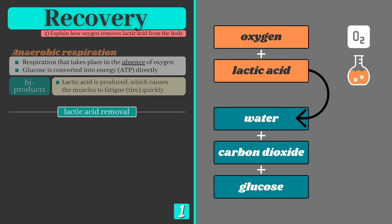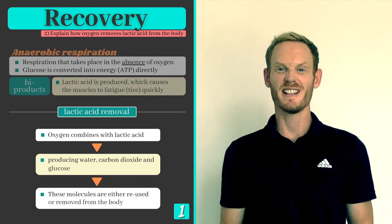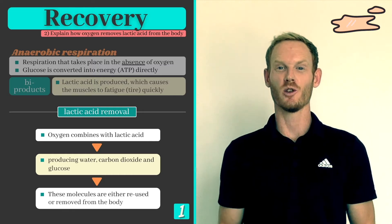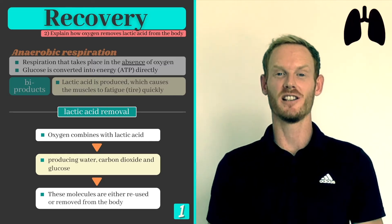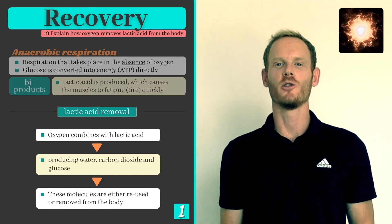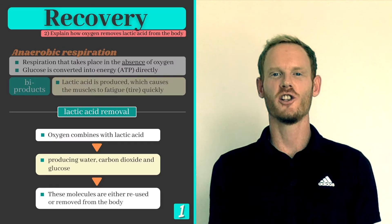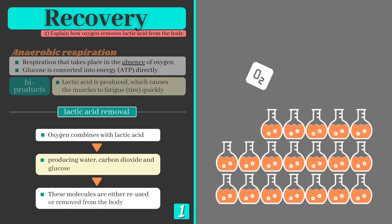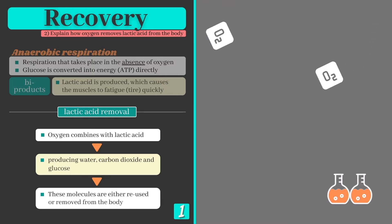So how is lactic acid removed from the body? Put simply, oxygen combines with lactic acid converting it into water, carbon dioxide, and a small quantity of glucose. The water is excreted in the urine or used elsewhere in the body, carbon dioxide is transported to the lungs and exhaled, while the glucose can be used as a fuel source for further energy production. Oxygen is the key factor here and a demand for it will remain until all the lactic acid has been broken down and removed.